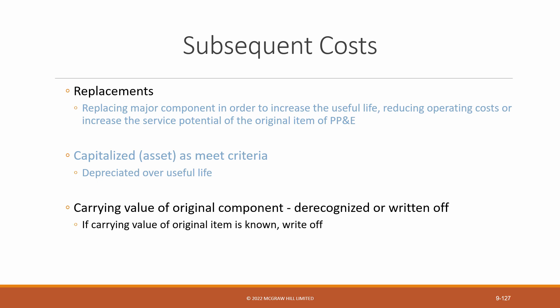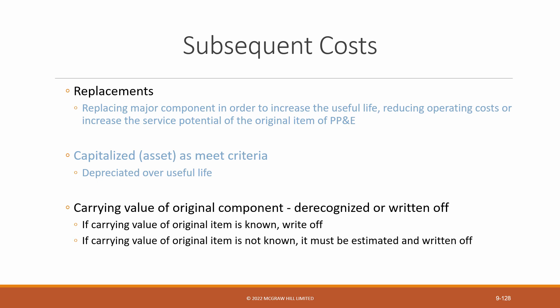If the carrying value is known because it's been reported as a separate component originally — a separate item of PP&E — then the original value of the component and the related accumulated depreciation is written off. If the carrying value is unknown because it was originally included in the value of another asset, then the carrying value must be estimated. That estimated cost of the old part or component and the related accumulated depreciation must be written off.